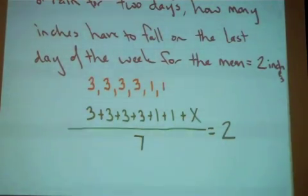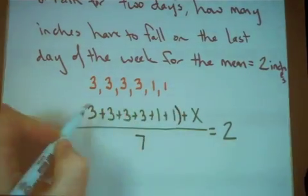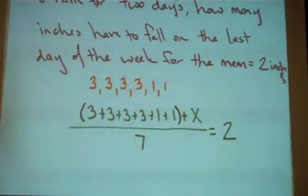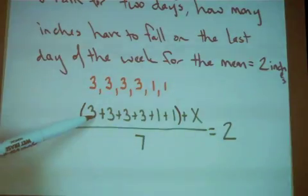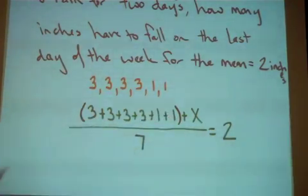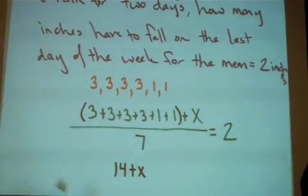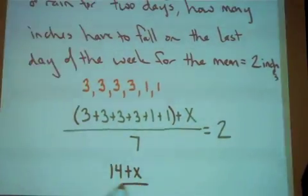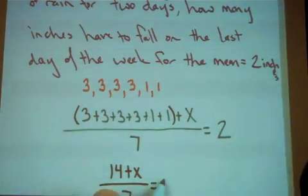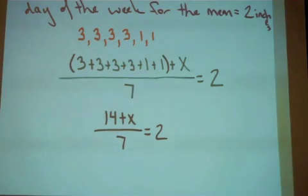Do you remember what we need to do first? We have implied parentheses here. So four threes is twelve, thirteen, fourteen. So fourteen plus some unknown value of x, divided by seven, needs to give me an answer of two.